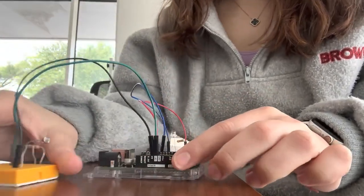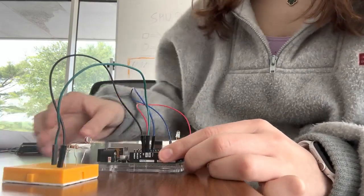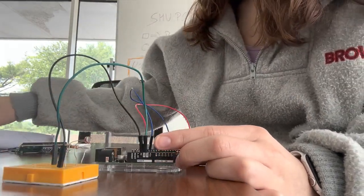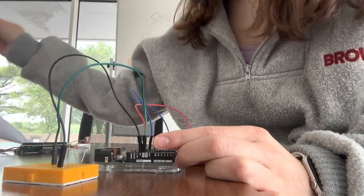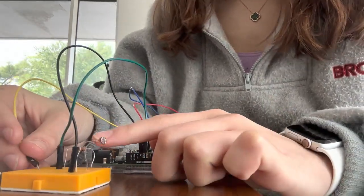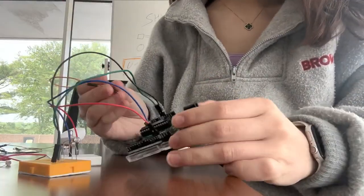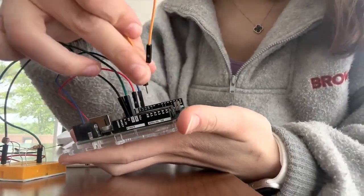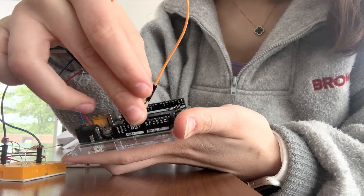So here we're almost done with our receiver, but we have to connect an analog. We have to connect an analog in between the photoresistor and the resistor. Take your wire, connect it to any of the analog ports. I'm going to connect it to A0.